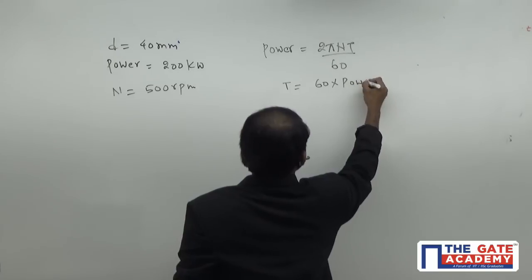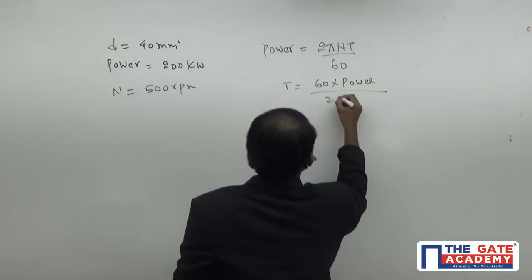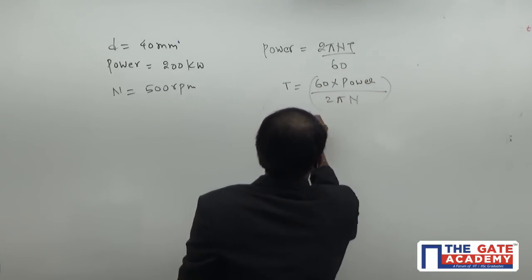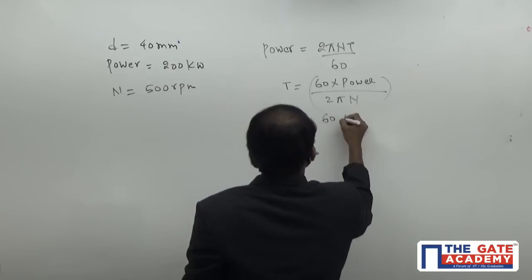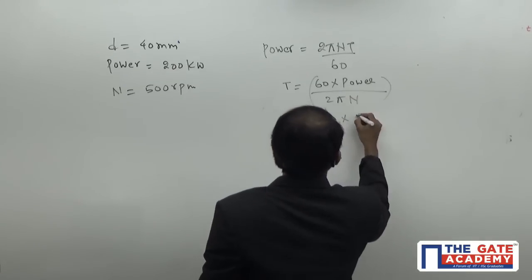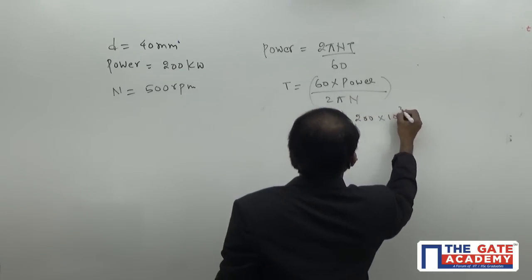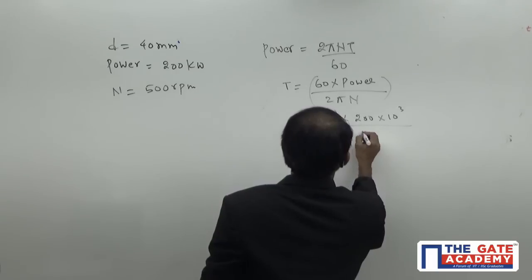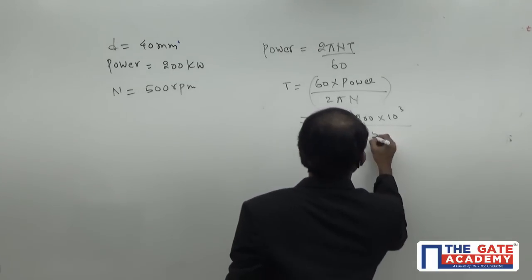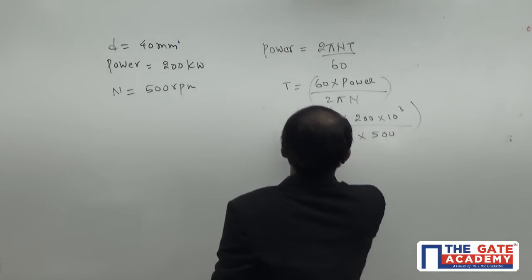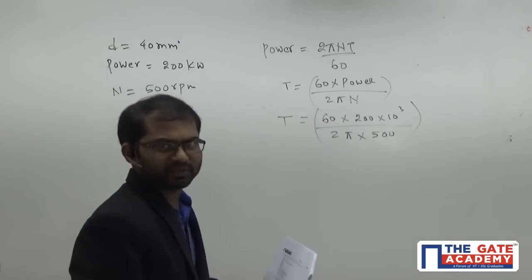Substituting the values: torque equals 60 times 200 times 10³ divided by 2π times 500. This gives us the torque value after simplification.